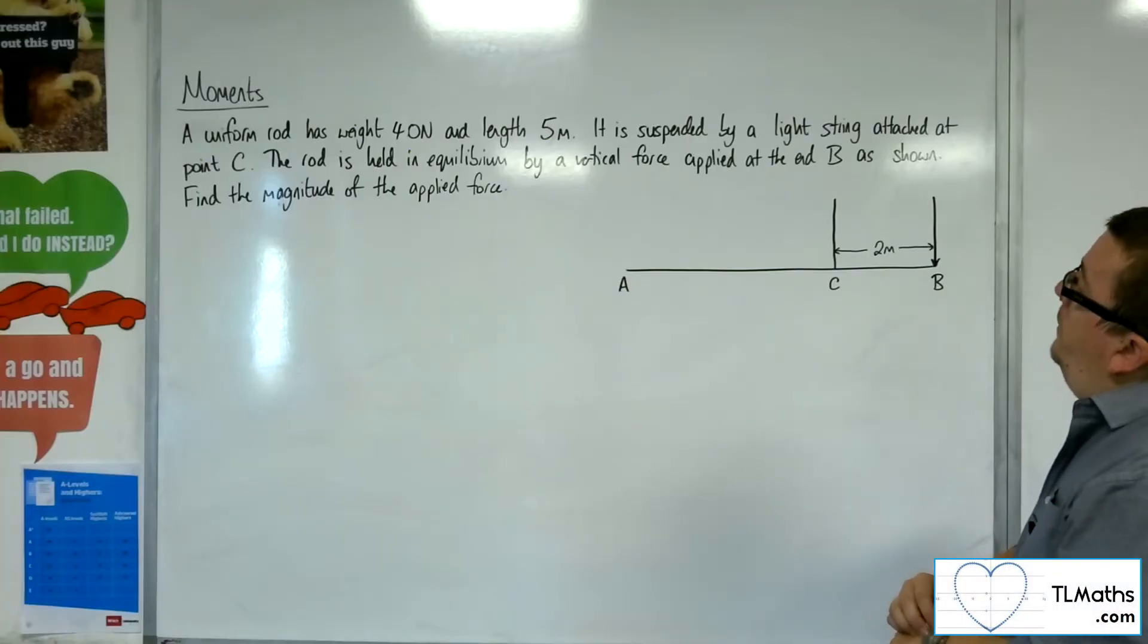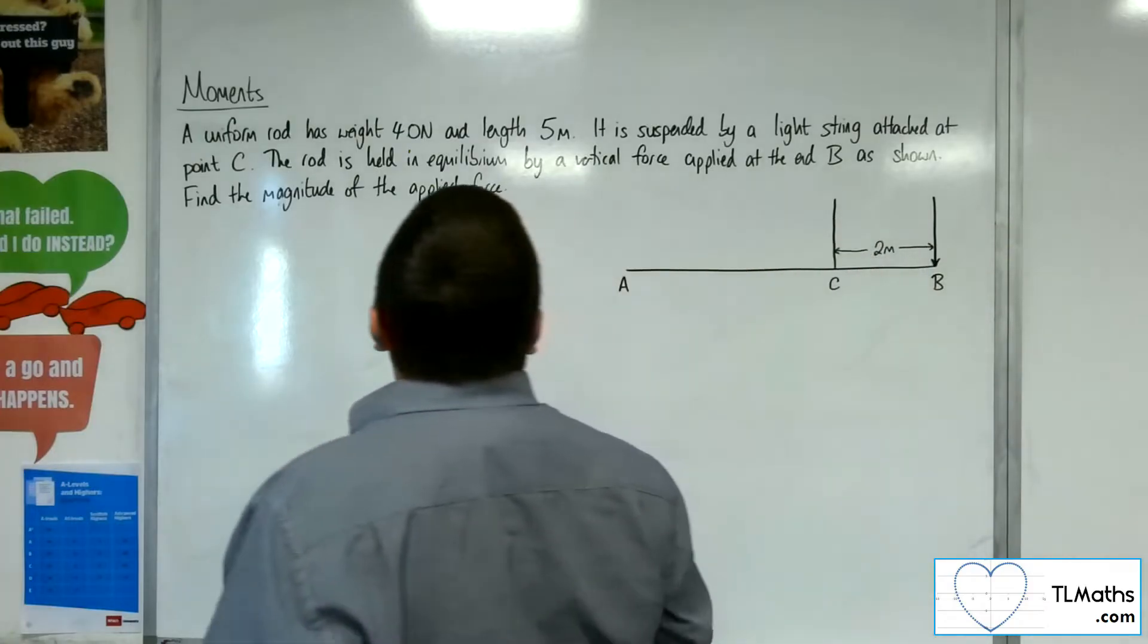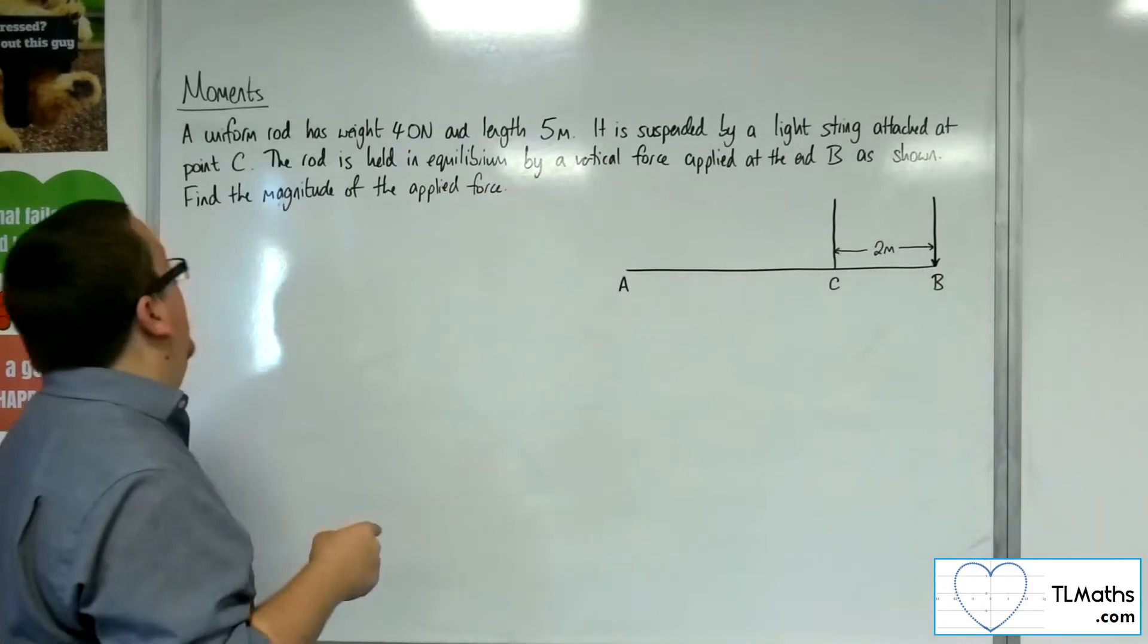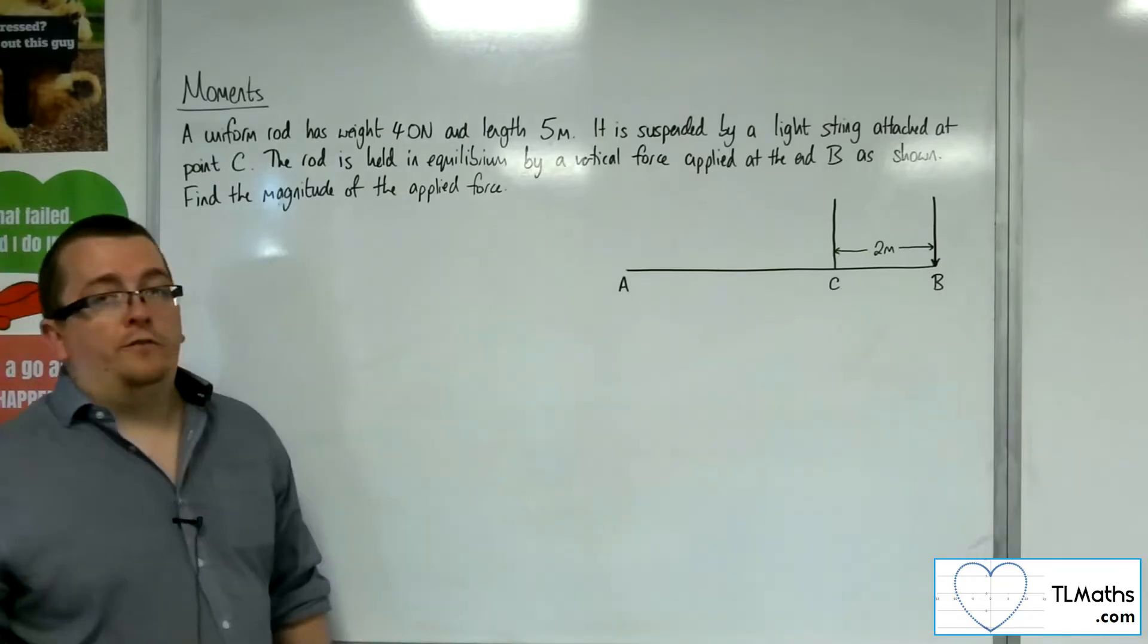It is suspended by a light string attached to point C. The rod is held in equilibrium by a vertical force applied at end B, as shown. Find the magnitude of the applied force.